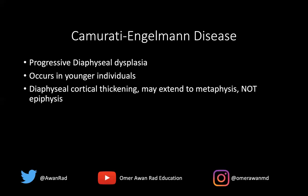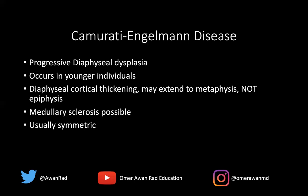Typically this presents with diaphyseal cortical thickening. It may extend to the metadiaphysis, but it will never extend to the epiphysis — if you see epiphyseal involvement, it's not Camurati-Engelmann disease. You can get some intramedullary sclerosis, as we saw in this case, but that's not the dominant feature. The dominant feature is endosteal and periosteal cortical thickening in a long bone. Typically it's symmetric, so it will often be bilateral.